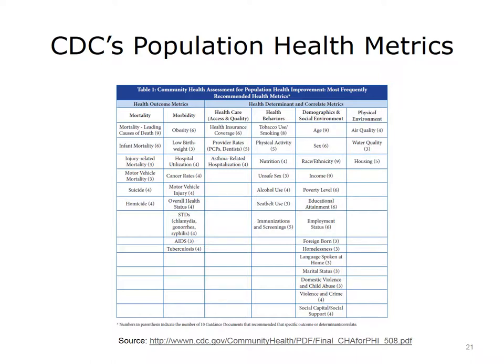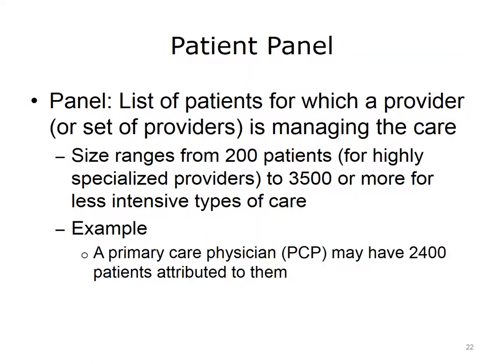Each of these types of measures may be needed for a well-functioning population health data analytics system. Population health is frequently implemented at the clinic level by managing the panel of patients the clinic is responsible for. A panel of patients is the list of patients for which a provider or set of providers is managing the care. The size ranges from 200 for highly specialized providers to 3,500 or more for less intensive types of primary care for largely healthy populations.